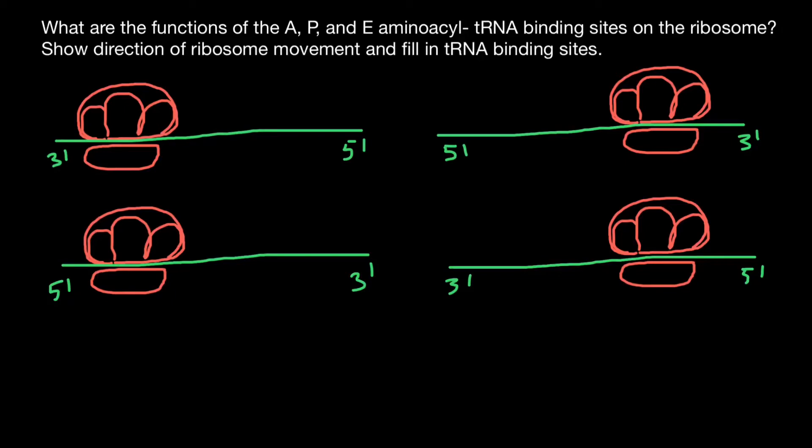Hello and welcome to Nikolai's genetics lessons. Today's question is: what are the functions of the A, P, and E aminoacyl tRNA binding sites on the ribosome? Show the direction of ribosome movement and fill in the tRNA binding sites.